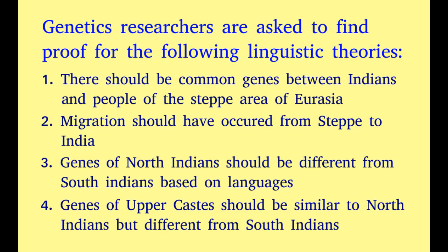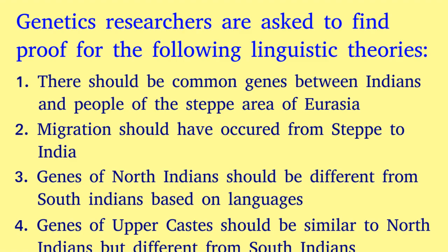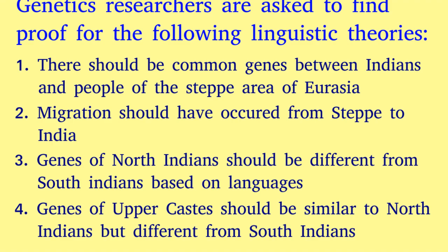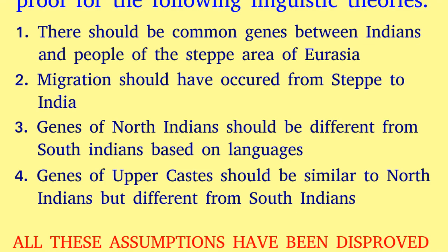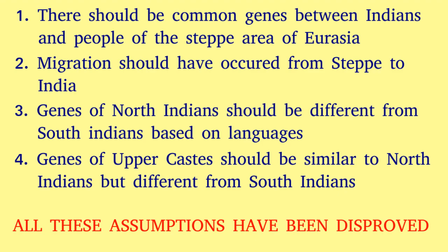Genetic researchers are asked to find proof for the following linguistic theories: 1. There should be common genes between Indians and people of the steppe area of Eurasia. 2. Migration should have occurred from the steppe to India. 3. Genes of North Indians should be different from those of South Indians based on languages. 4. Genes of the upper castes should be similar to North Indians but different from South Indians.